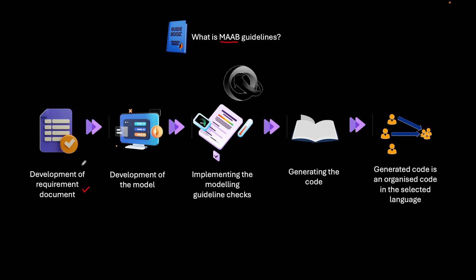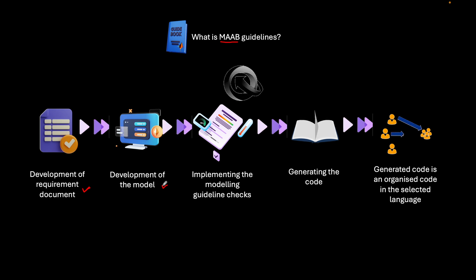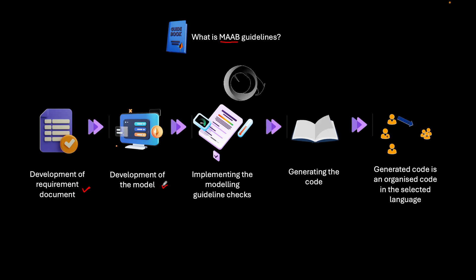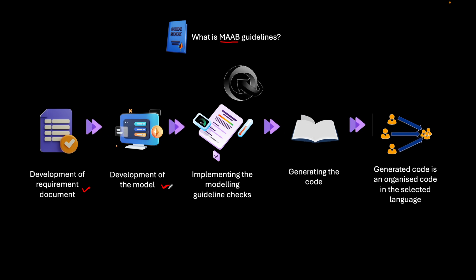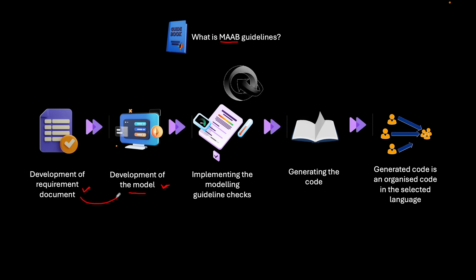These requirements define the boundaries of the software — what it should do and what it should not do. Based on those requirement documents we do create models. The second stage is to develop models. Most of the modeling work is done at this model development stage, where we use different blocks — either library blocks provided by organizations, user-defined blocks, or basic Simulink blocks.